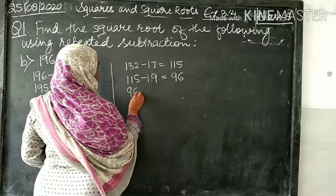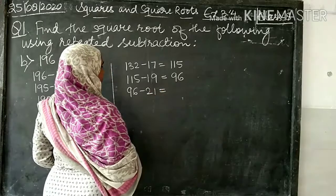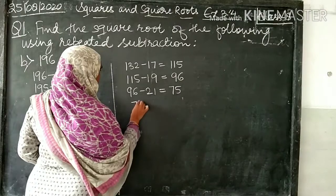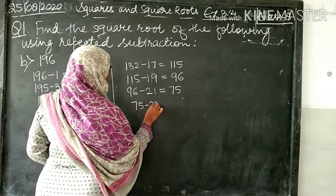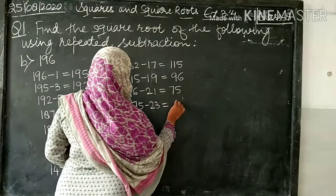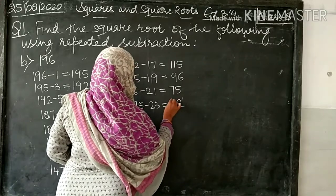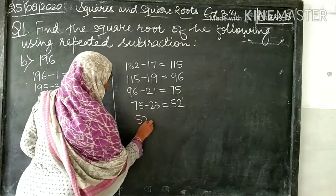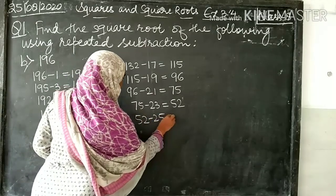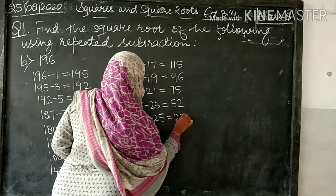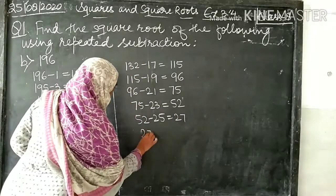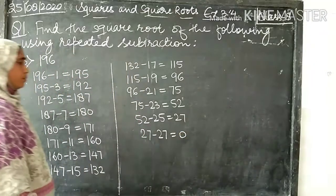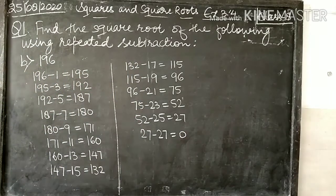96 minus 21 equals 75, minus 23 equals 52, minus 25, 27 equals 0.